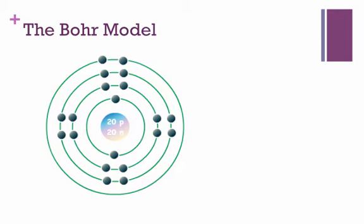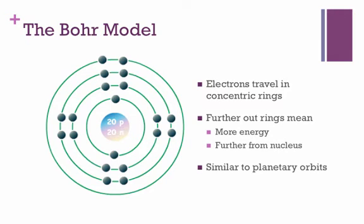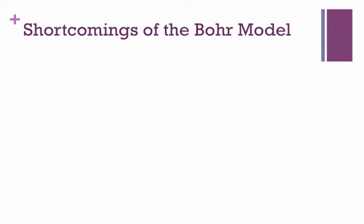Let's do a quick recap of what the Bohr model is. Basically, we have electrons traveling in concentric rings around the nucleus — similar to planetary orbits, where planets orbit the sun and electrons orbit the nucleus in a similar way. Electrons further out in the rings have more energy and are also further from the nucleus. We've talked about how these assumptions are not necessarily good ones, but the goal here was to present the Bohr model as originally intended.